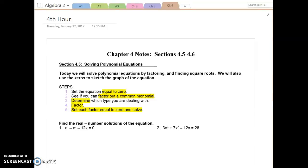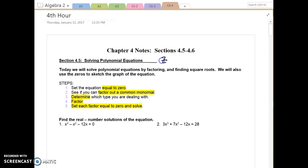Today we will solve polynomial equations by factoring, finding square roots, and use the zeros to sketch the graph of the equation. Something I want to remind you is the zeros are the same as the x-intercepts, and that's the same as the solutions. The solutions of the polynomial equation are also the x-intercepts when you graph it, and we also refer to those as the zeros of the function.